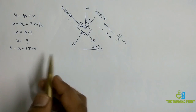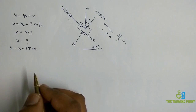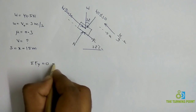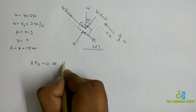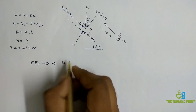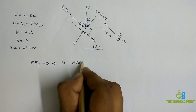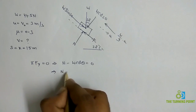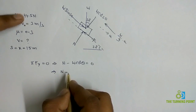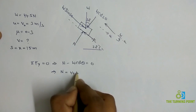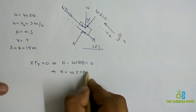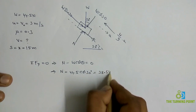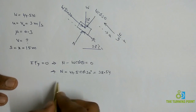Applying σFy = 0: N acting along the positive y direction and w cos θ acting along the negative y direction, so N − w cos θ = 0, where θ = 30°. Therefore N = w cos θ = 44.5 × cos 30° = 38.54 Newtons. This is the value of the normal reaction.